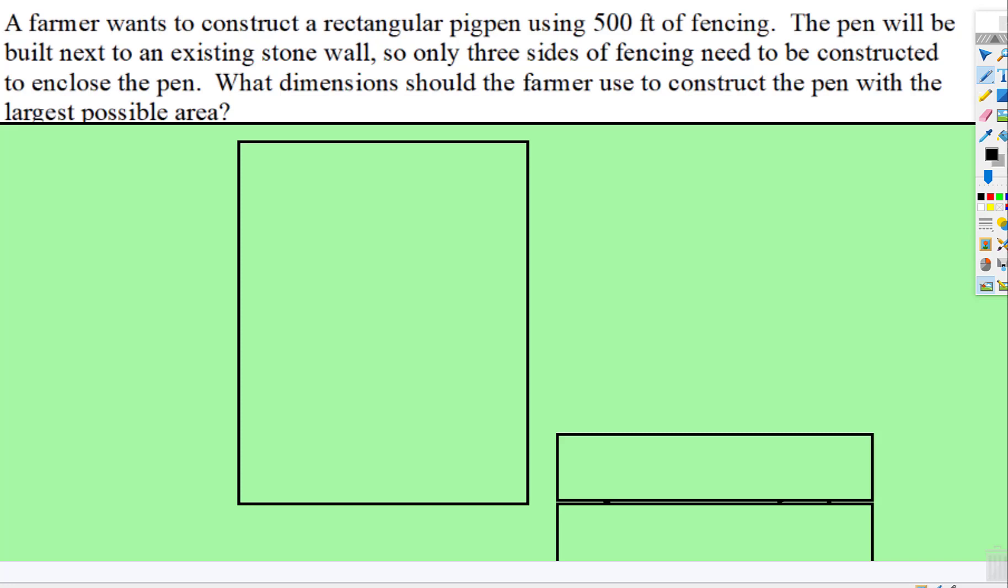Okay, another optimization problem where we're going to maximize the largest possible area. A farmer wants to construct a rectangular pig pen using 500 feet of fencing.